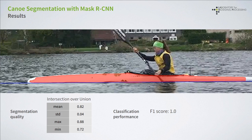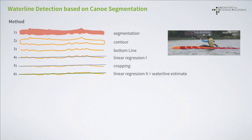The second part of the waterline detection problem is comprised of the following steps. We determine the contour of the segmentation and keep the bottom line of this contour. We then apply a first linear regression to obtain an initial estimate of the waterline. To remove the cropping of small waves and splashes, points above this line are rejected. Finally, we apply a second linear regression, and the result corresponds to the waterline estimate.